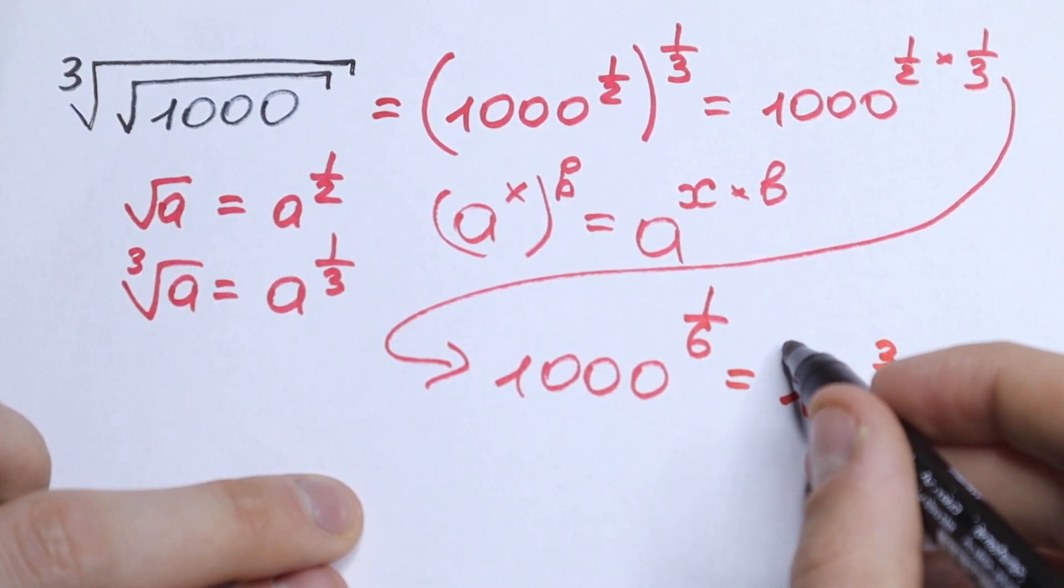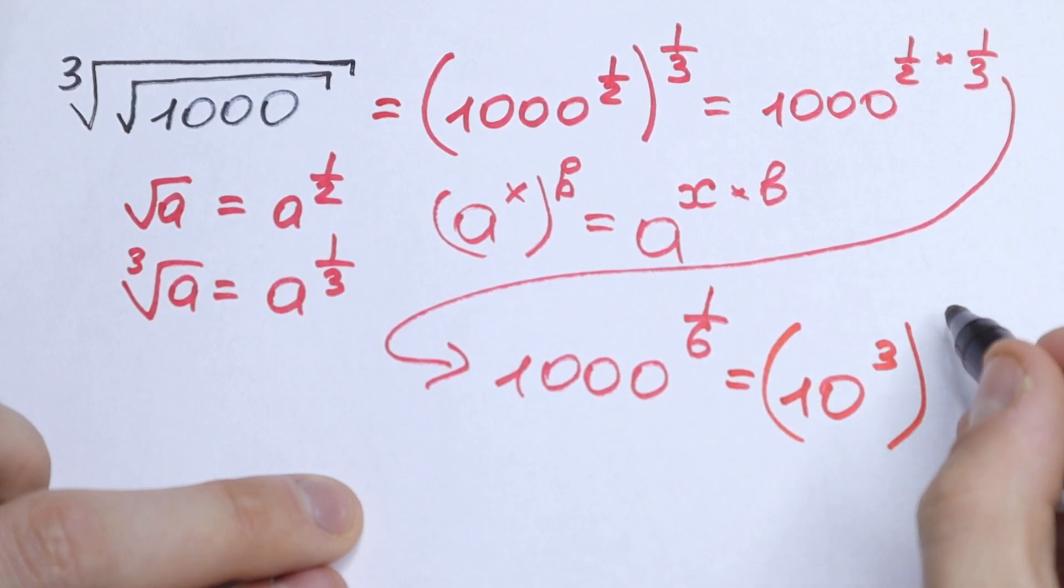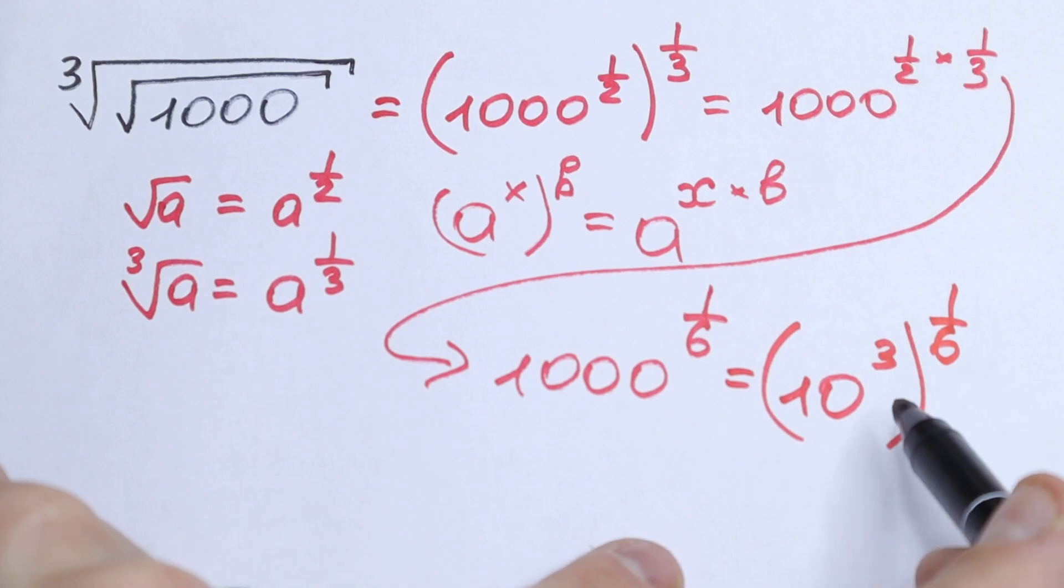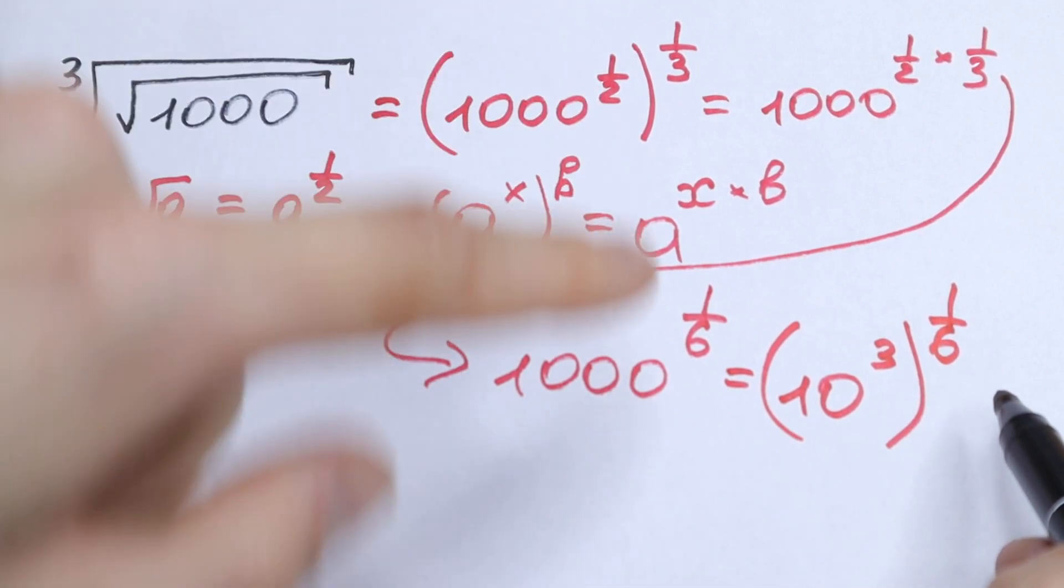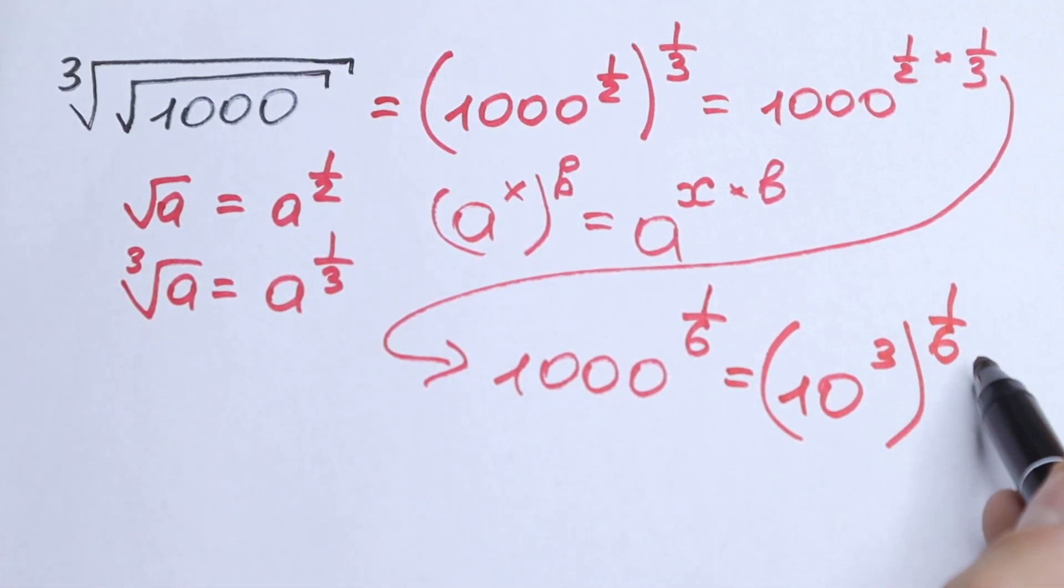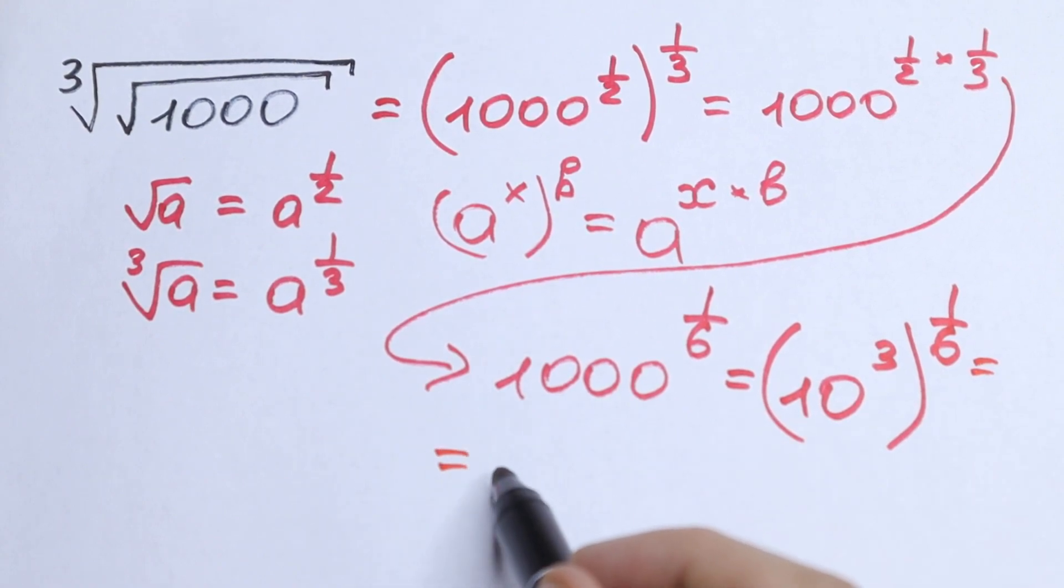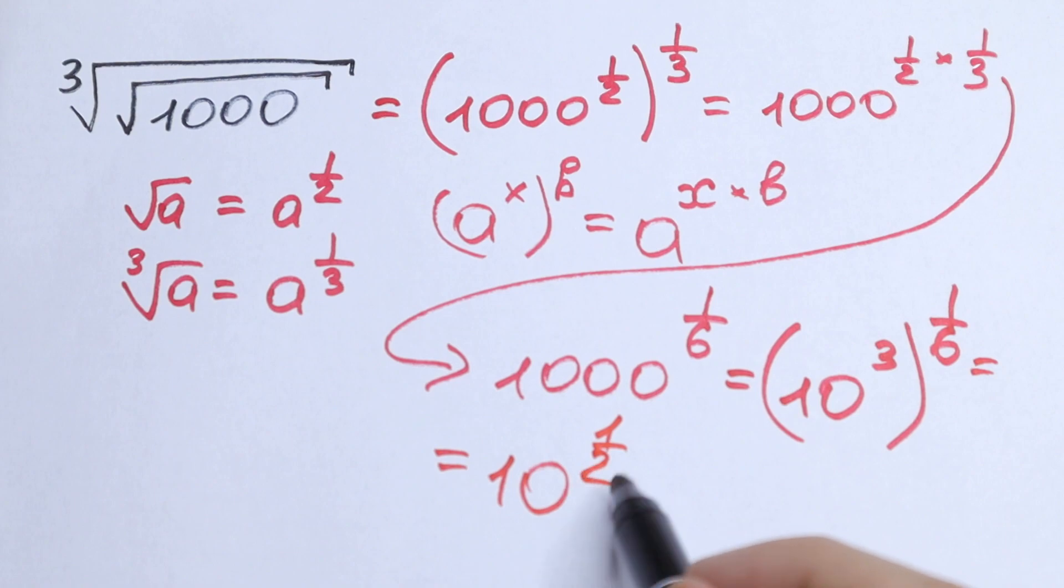This is really good to write here because if we write it as 10 cubed raised to the power 1/6, we will use this rule once more. And as a result we will have 3 times 1/6, we will have 10 to the power 1/2.